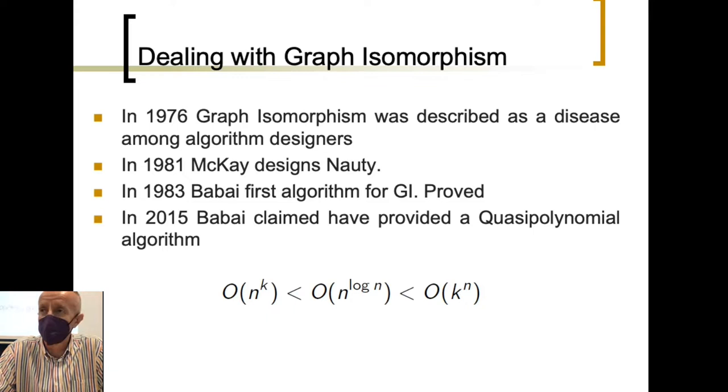What is quasi-polynomial? It means below-exponential, but over-polynomial. Exactly in the middle of this order you can see on the screen.